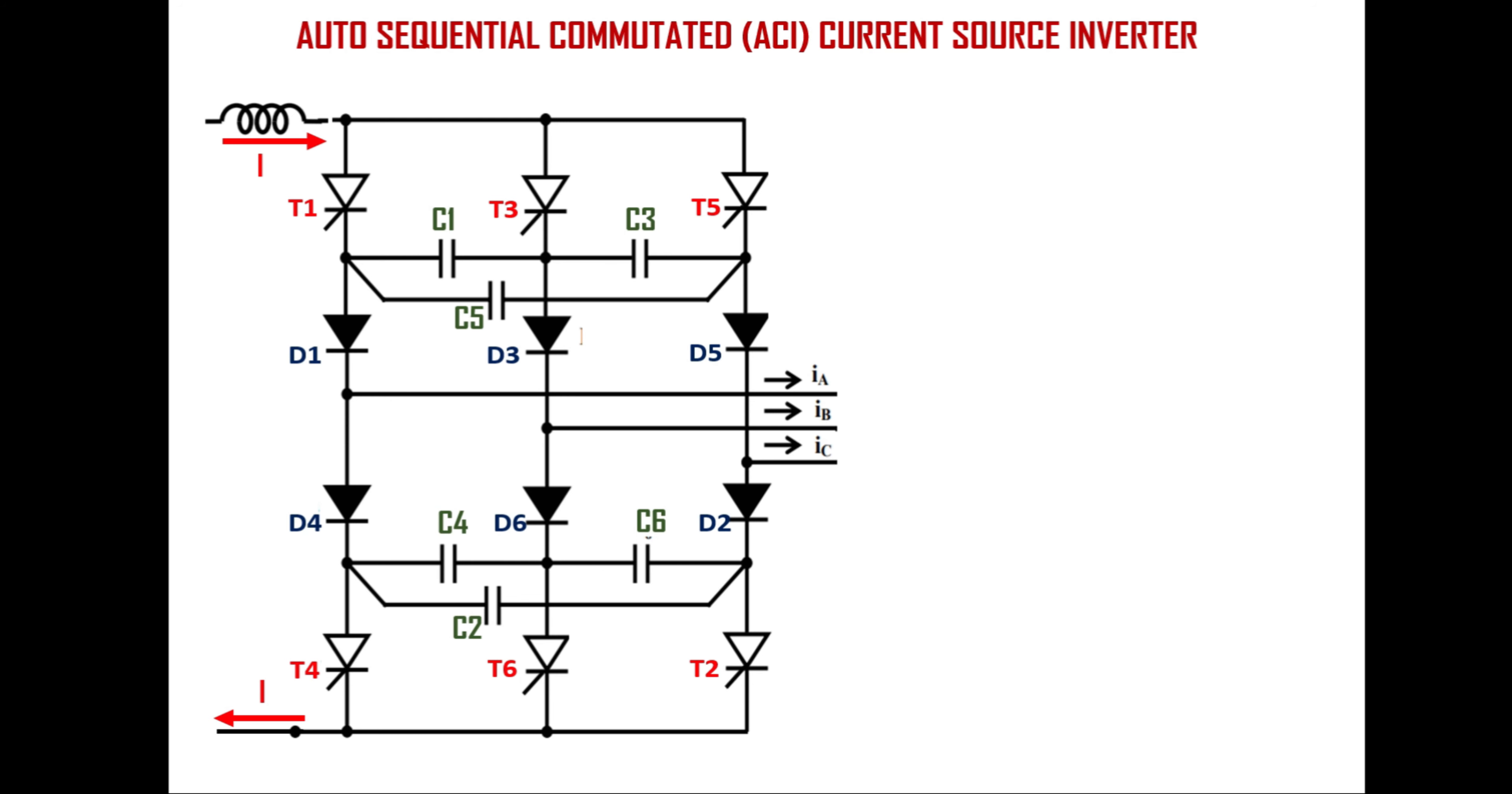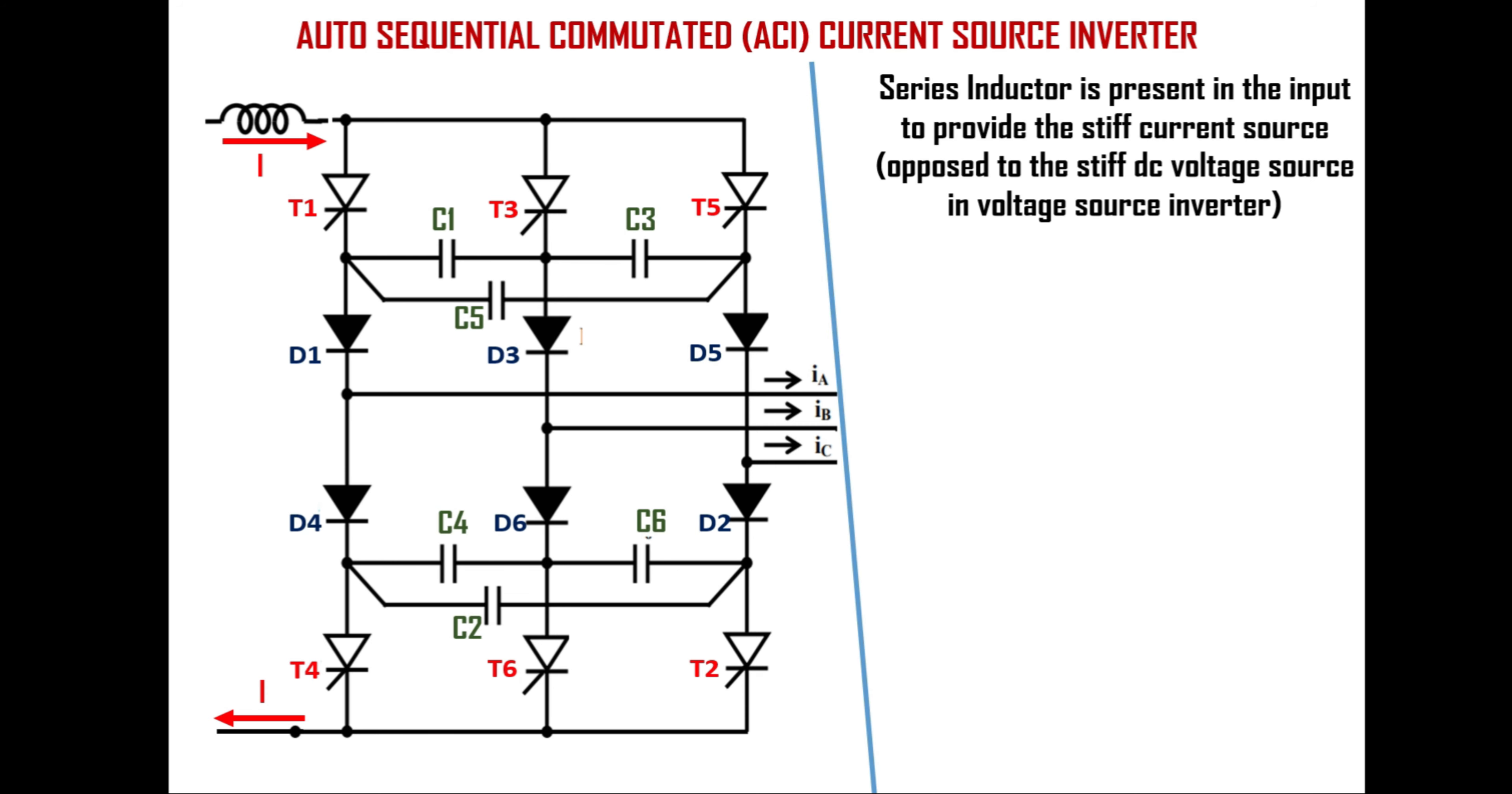Okay now let's see the most commonly used auto sequentially commutated current source inverter. Here a series inductor is to provide stiff current source as opposed to the stiff voltage source in voltage source inverter. Six thyristors are used to perform the function of switches.